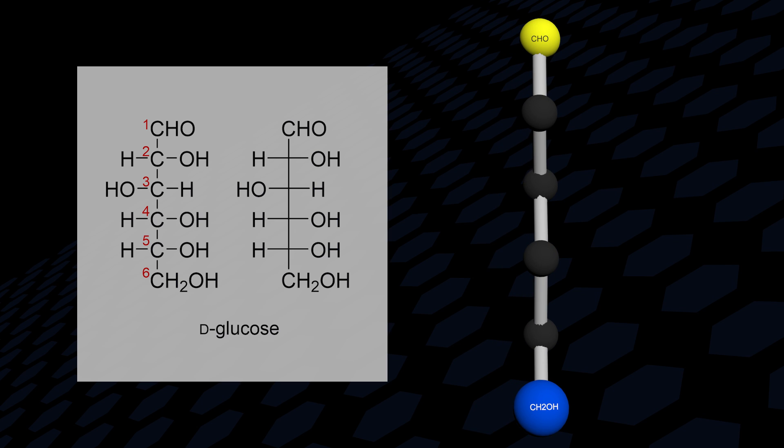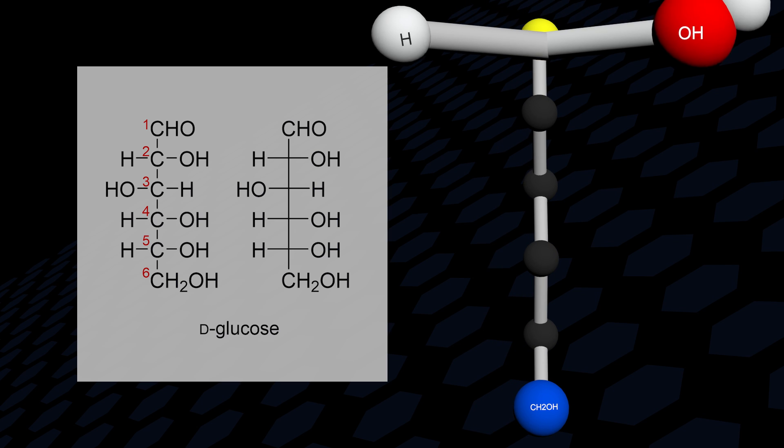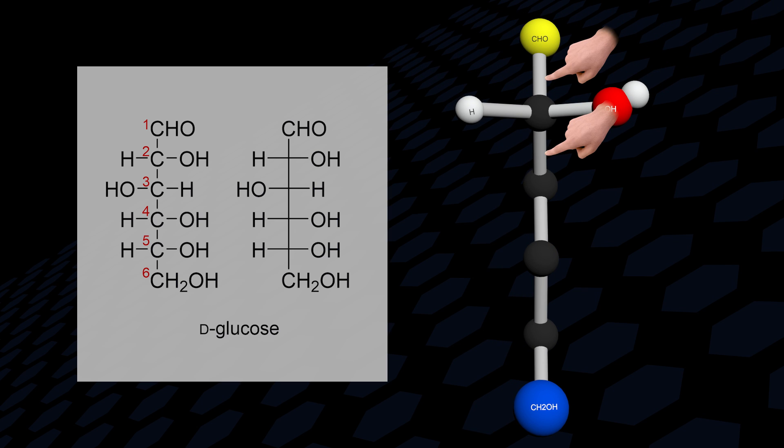Then, view each carbon individually with its vertical bonds pointing away when building the horizontal bonds.